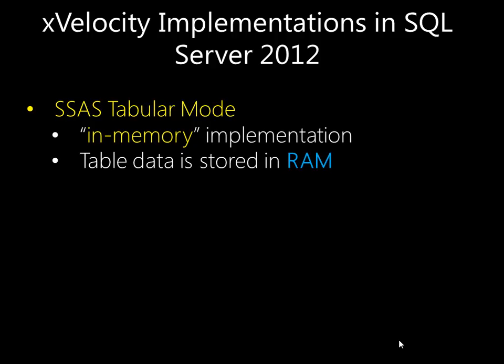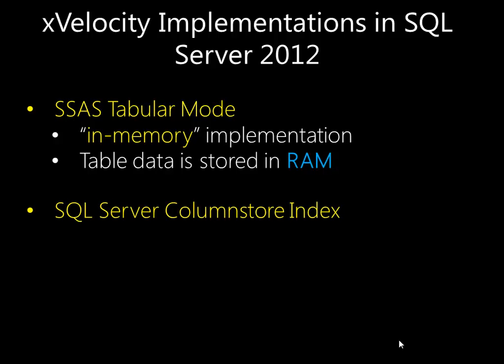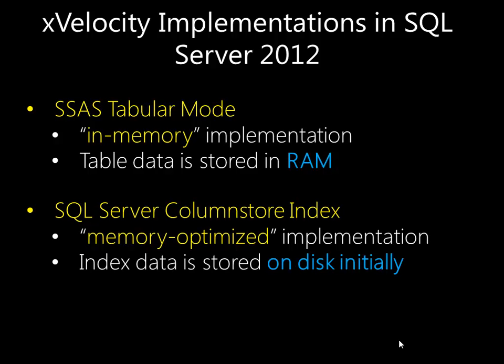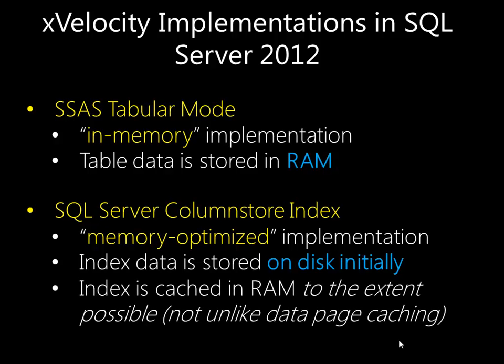In this implementation, all of the data is pulled out of relational stores or other data sources and stored in an in-memory database hosted by Analysis Services. The column store index is a little bit different — this implementation is what's called memory optimized. Data is stored initially in disk structures, then as the index is used, it's pulled into RAM and cached there, yielding much better performance on subsequent queries. The biggest difference is that with X-Velocity, these on-disk indexes are going to be very highly compressed.